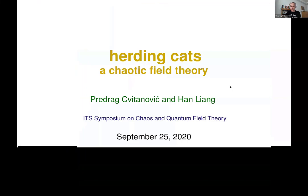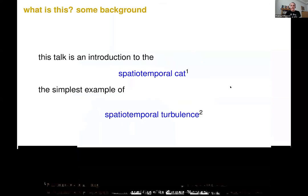This is work by Matt Goodorff and Han Yang, but I will only talk about Han Yang's work. I will introduce a very simple model of what I believe chaotic field theory should work like, and I view it as a simplest model of spatiotemporal turbulence.